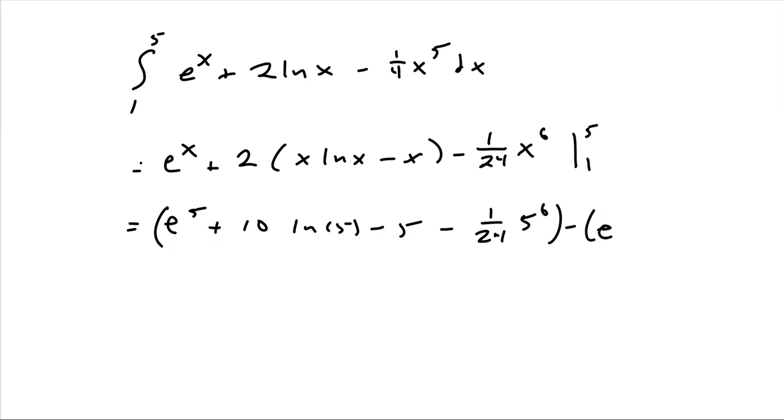Plus 2 ln(1) minus 1 minus 1/24. Now, combining terms and stuff like that. Let's see. Natural log of 1 is equal to what? So e to the what power equals 1? So this piece equals 0.